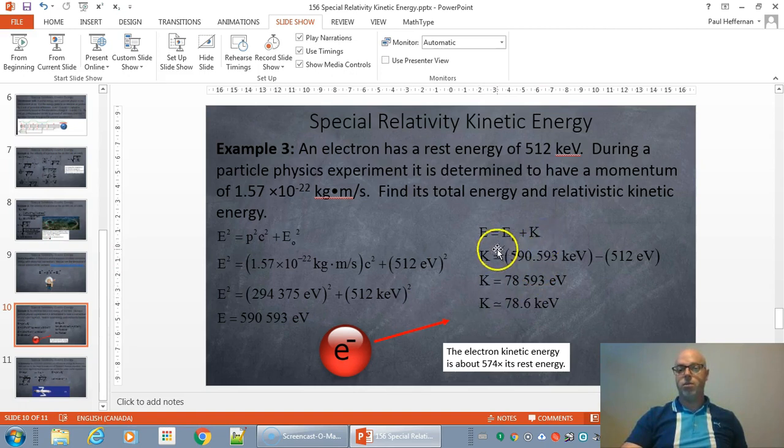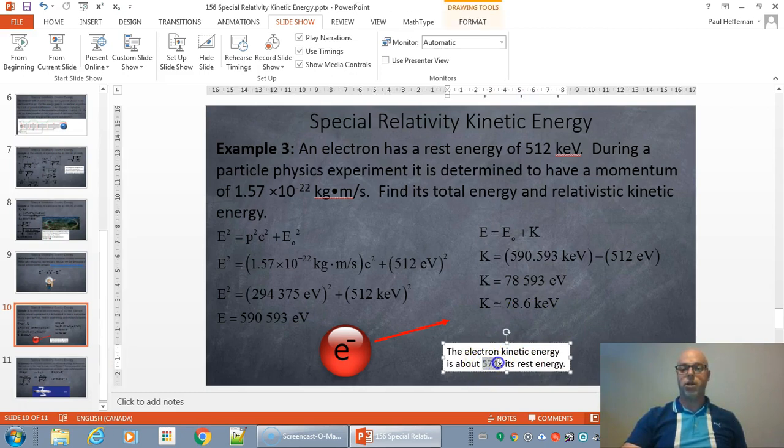When you do the kinetic energy, it's going to be your total energy subtract the rest energy. And so we get a kinetic energy of 78.6 kiloelectron volts, which is quite a bit. Actually, it's a fraction of its rest energy.